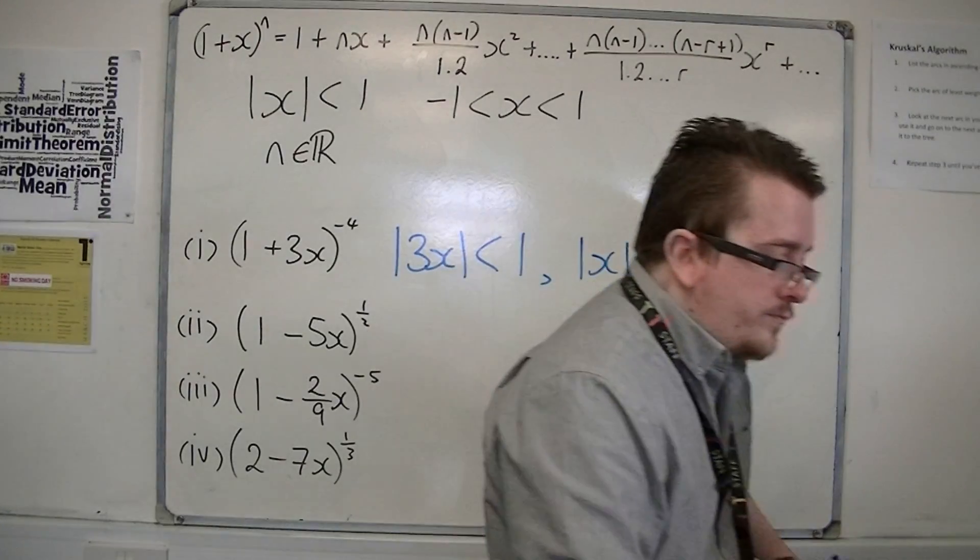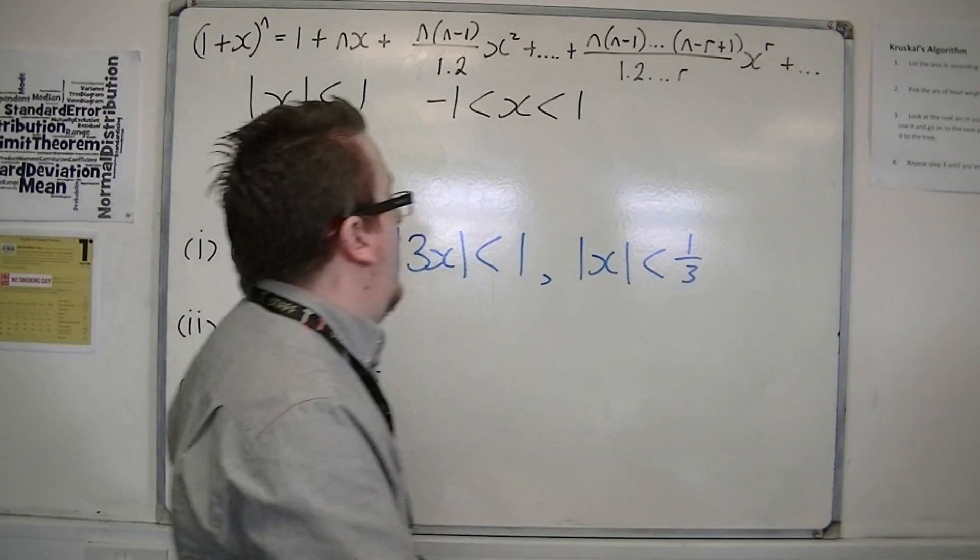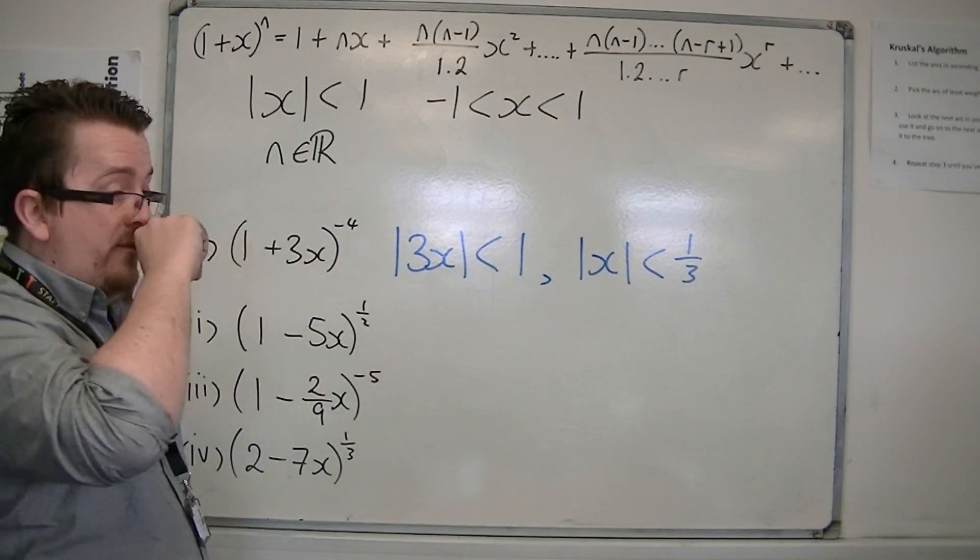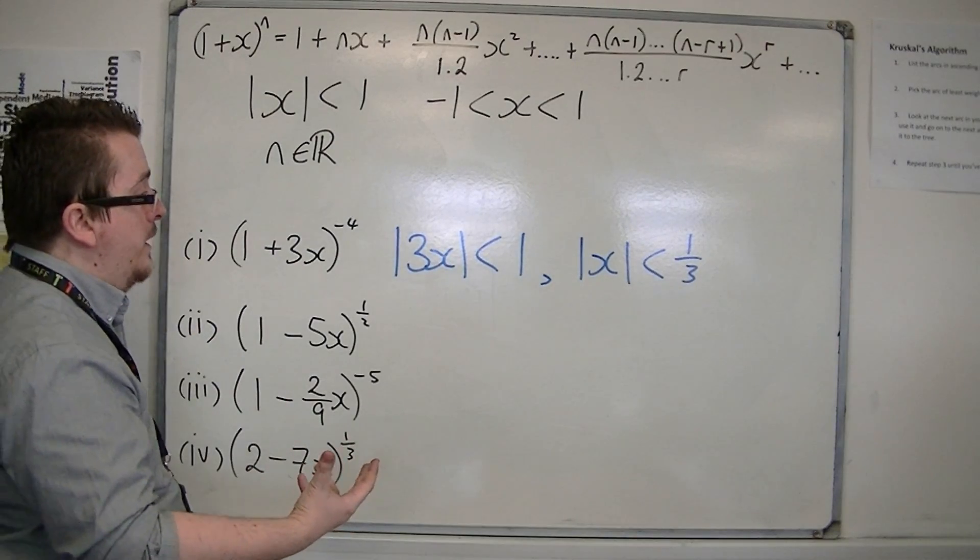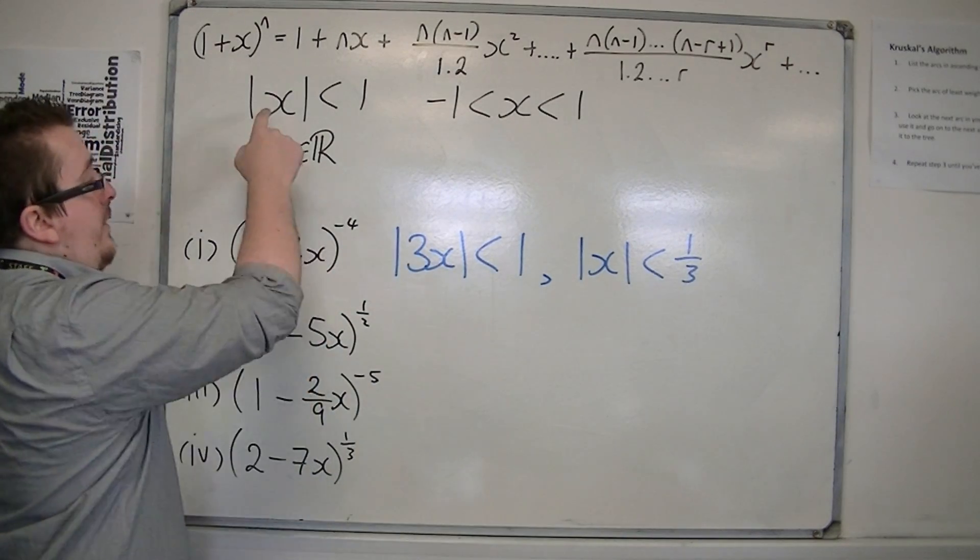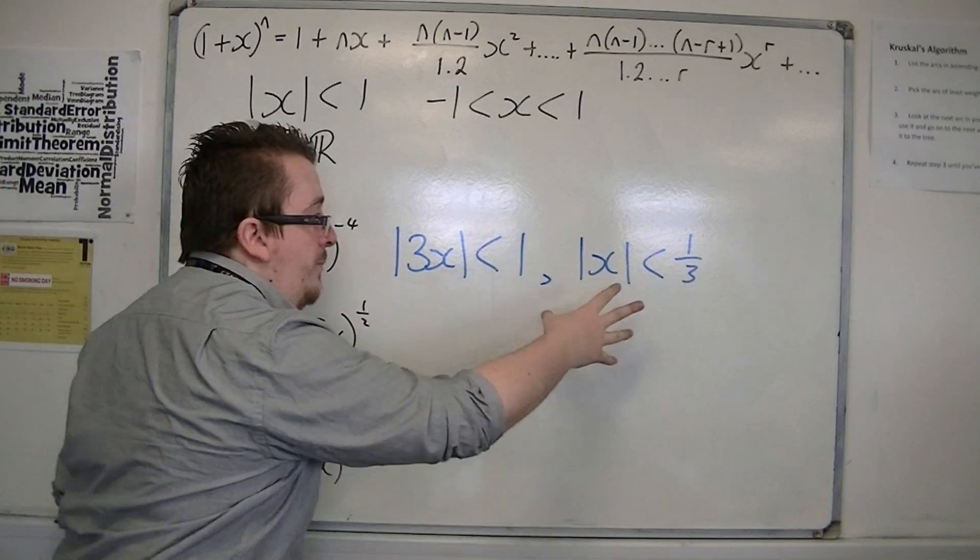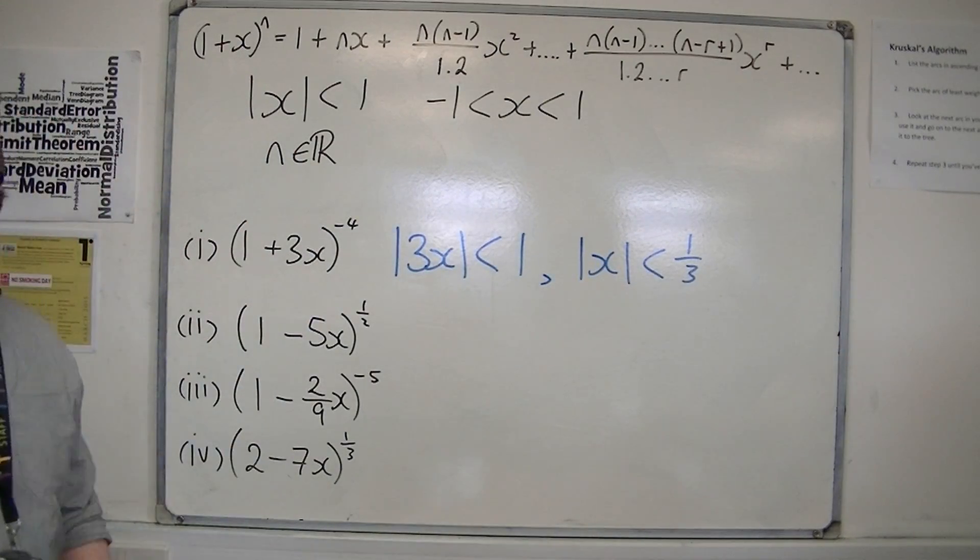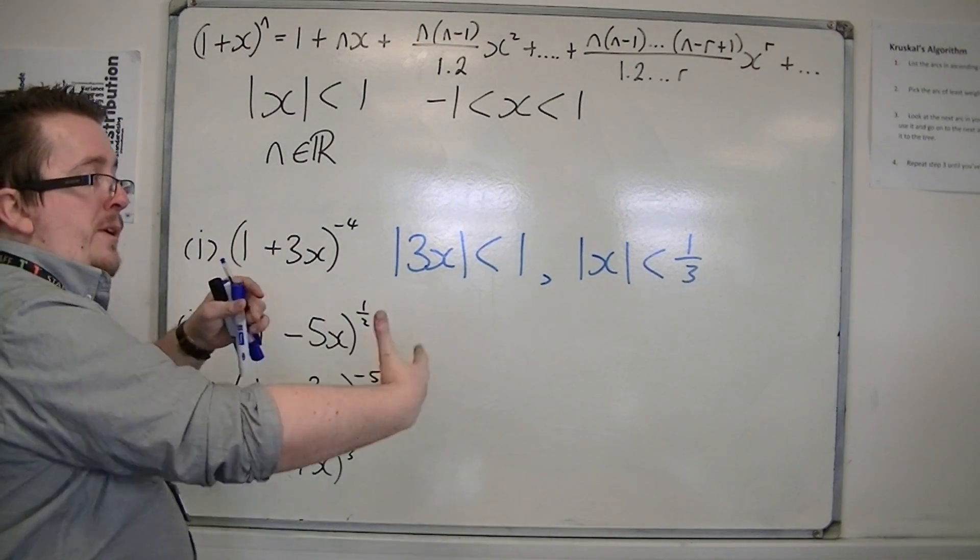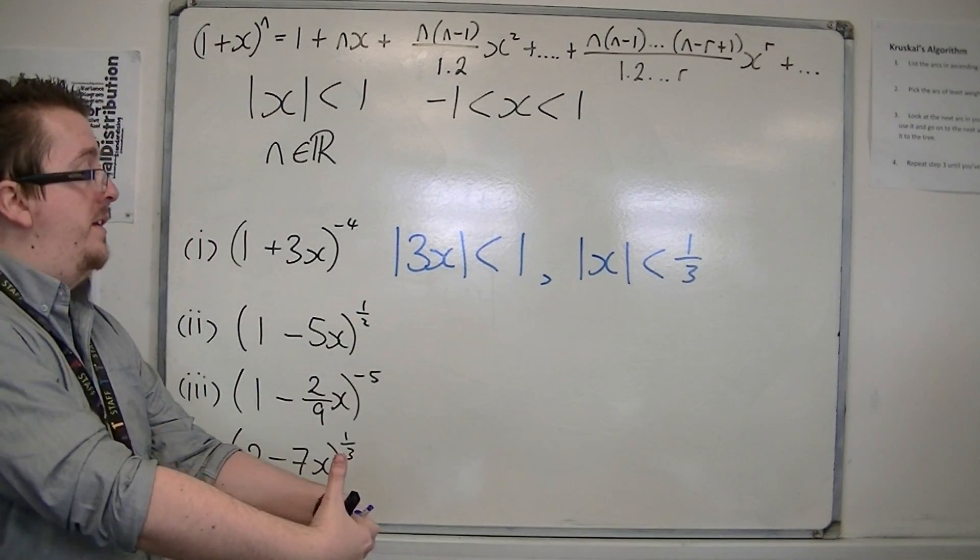That's how you can write down the range of values that it's valid for. You replace the x with 3x, divide both sides by 3, and you get mod x is less than 1 third. Which means that x must be between minus 1 third and positive 1 third.